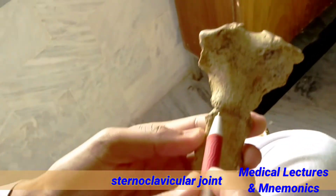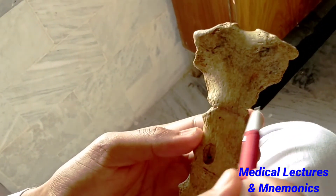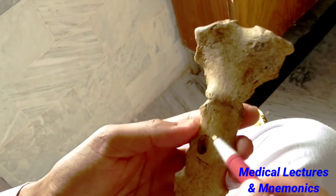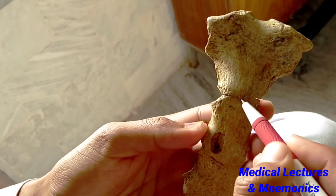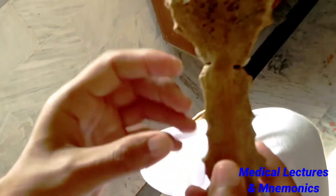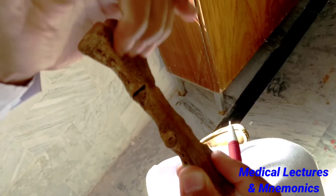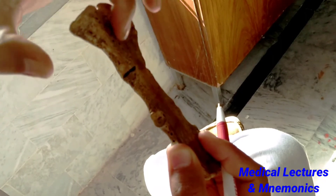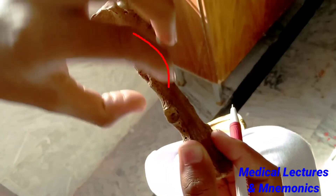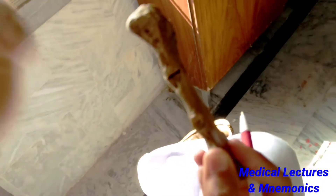This is called the inferior border of the manubrium. This inferior border is articulated with the upper end of the body of the sternum through an angle. From the lateral view, you can see there is a slight posterior deviation of the manubrium, forming an angle between the manubrium and the body of the sternum, which is called the sternal angle and is about 163 degrees.